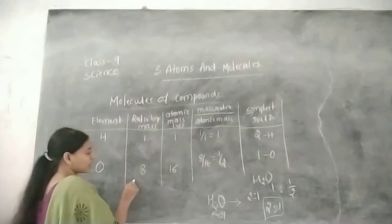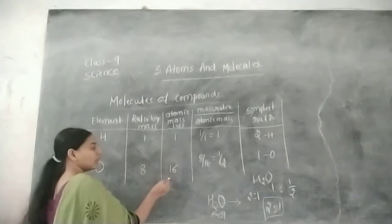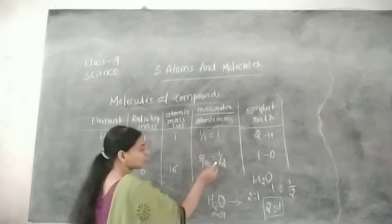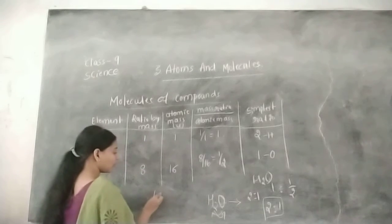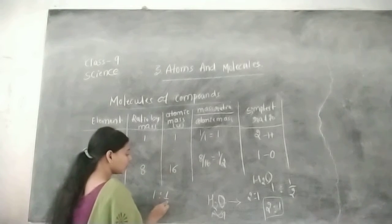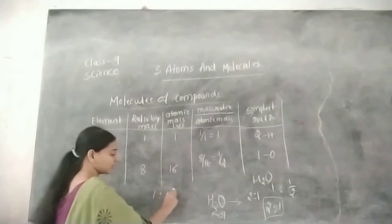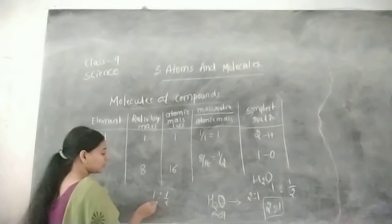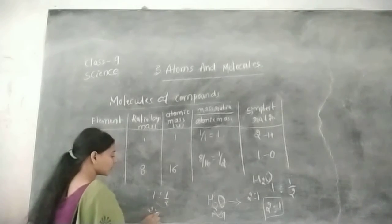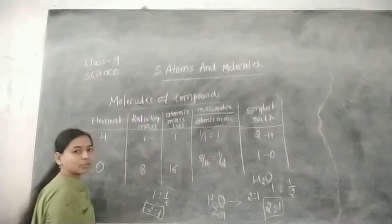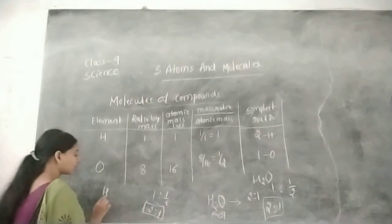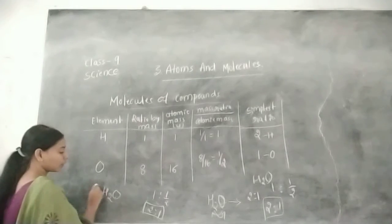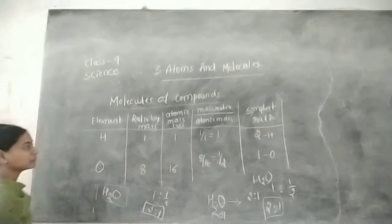The ratio by mass for oxygen is 8 and the atomic mass of oxygen is 16. When we divide these two terms, that is 8/16, we get 1/2. The ratio is 1 to 1/2. To express this not as a fraction but in whole number form, we multiply through by 2, giving us 2 hydrogen and 1 oxygen. This is the formation of water.